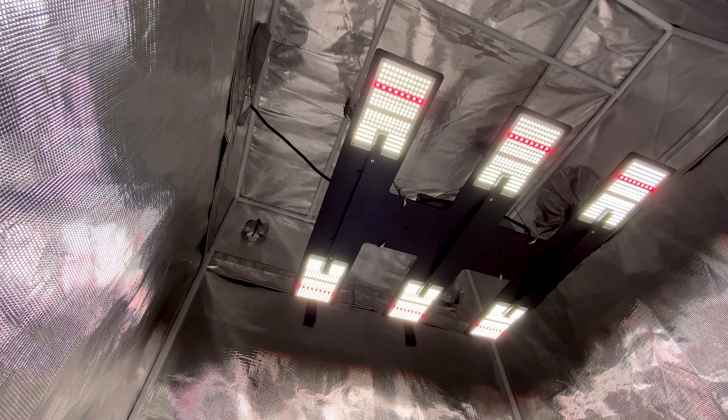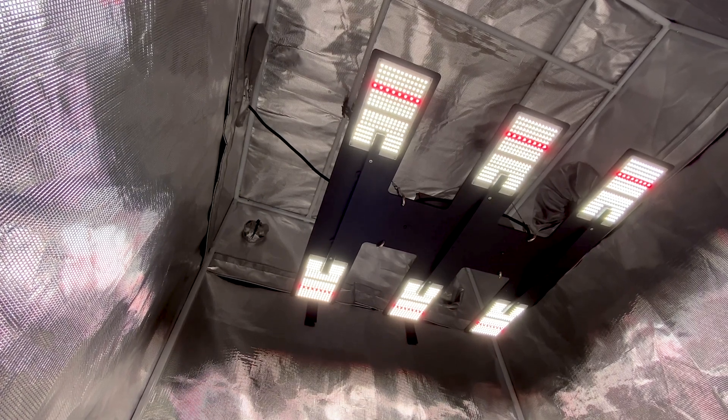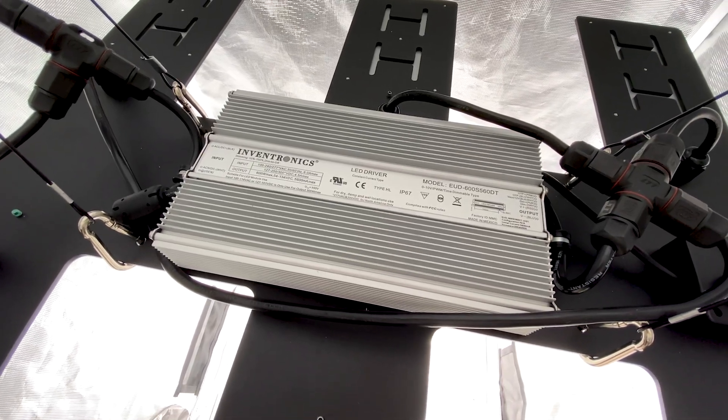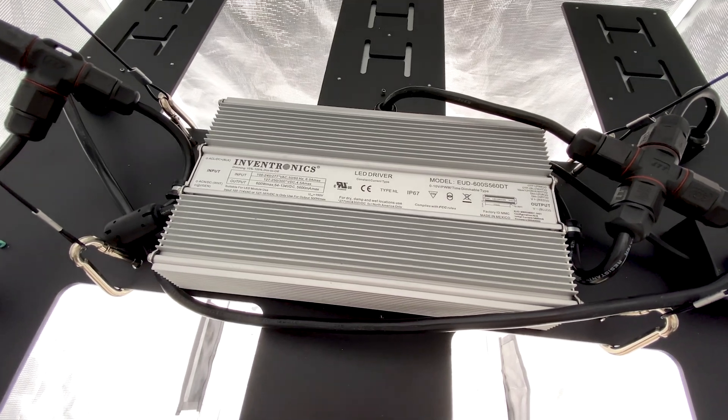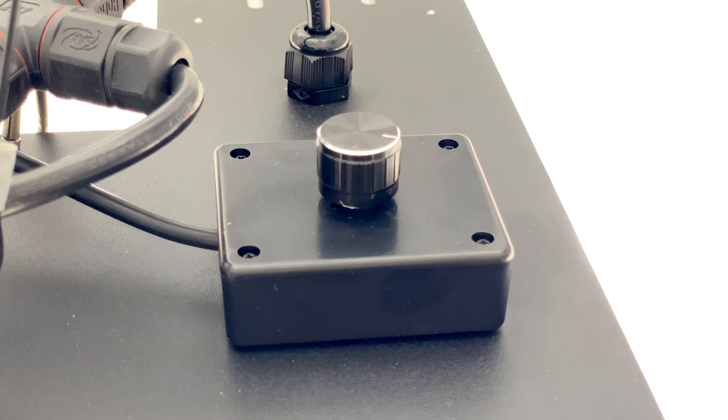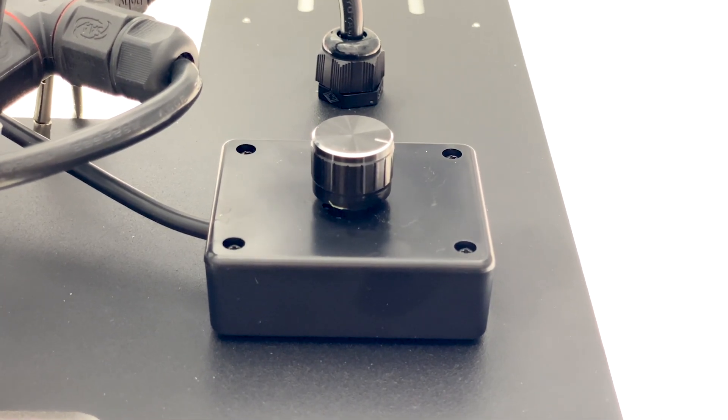Like the other Scorpion Lights, the Blackbird features six quantum boards spaced apart to provide even coverage over the grow space. The other side of the anodized aluminum heatsink contains a 600 watt Inventronics driver and an external dimmer, dimmable to about 20% intensity or around 100 watts.